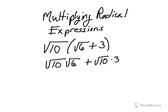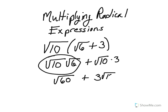In the first term, we're going to multiply 6 times 10 and get the square root of 60. In the second term, we end up with 3 square root of 10.